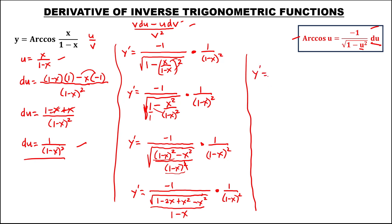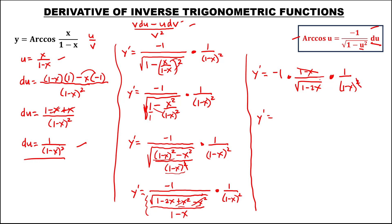Then we have y prime equals negative 1. We can take the reciprocal of this denominator, so we have times the reciprocal — which is 1 minus x — over the square root. Since we can combine this x squared: positive and negative, this one is 0, so the remaining is 1 minus 2x, then times 1 over the quantity of 1 minus x, to the power 2. Observe that we can cancel this 1 minus x and 1 minus x, then multiply. So we have negative 1 over 1 minus x, times the square root of 1 minus 2x.